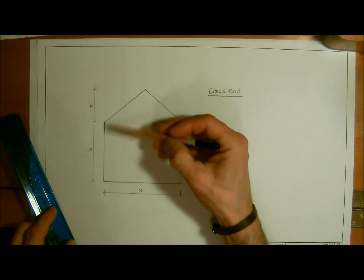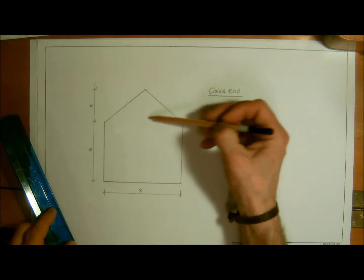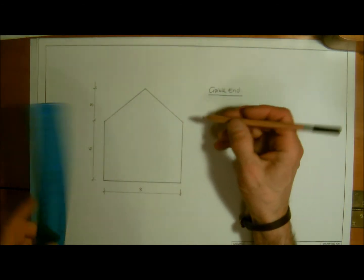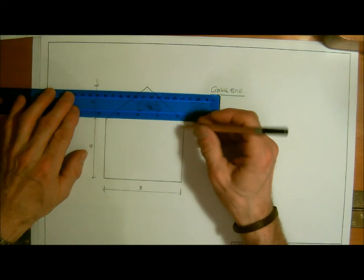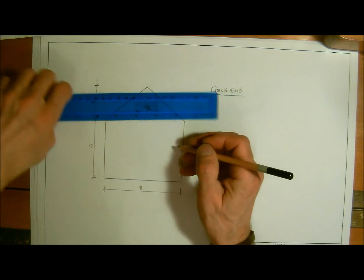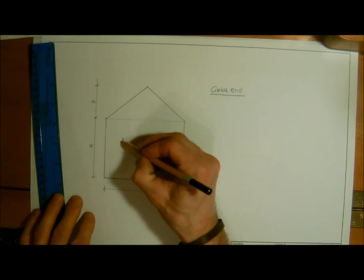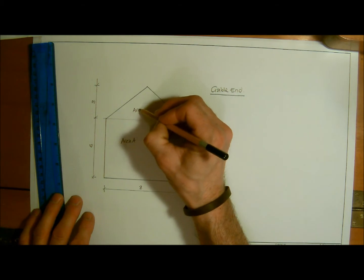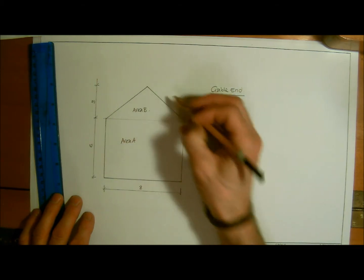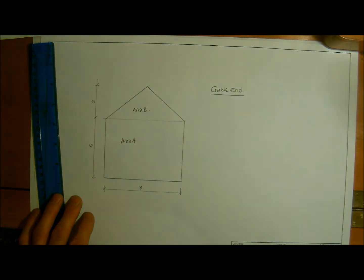We can see here that we have a rectangle with a triangle on top. What we're going to do is call this Area A and Area B. Area A is going to be very simple.